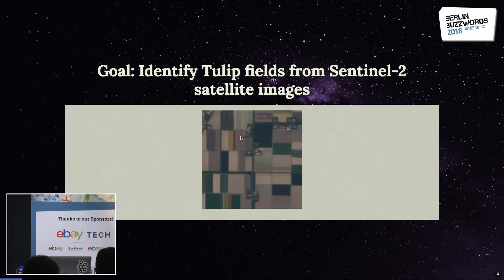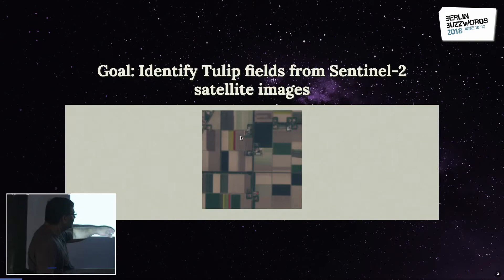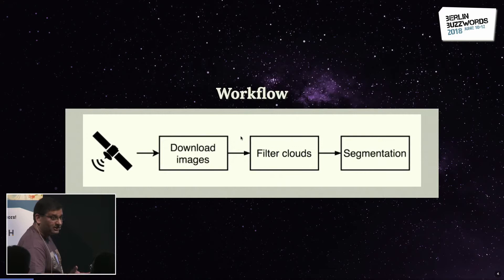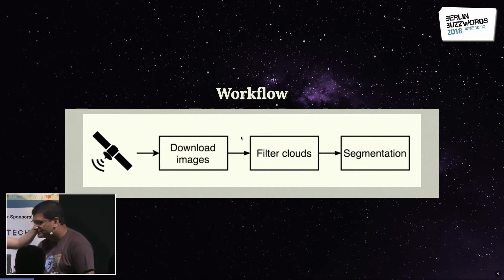The goal here is to identify tulip fields from Sentinel-2 satellite images. This is an example — this may be a tulip field and this band here. That's what we're trying to identify from satellite images. The typical workflow is: you download your images, filter out the images that have cloud cover, and then segment your images for tulip fields.